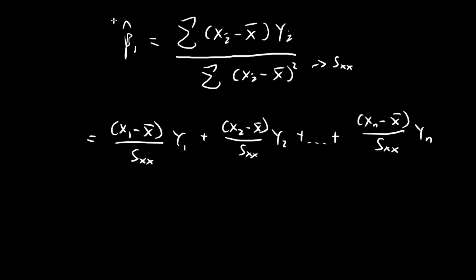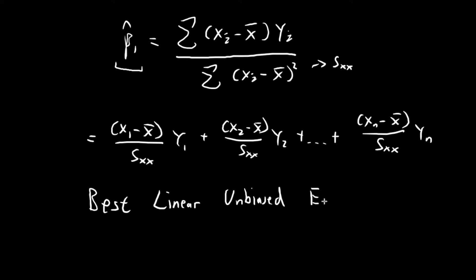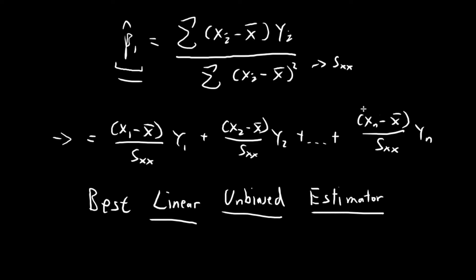What I want to show you in this video is that this estimator, beta 1 hat, is what we call a best linear unbiased estimator. It's called an estimator because this thing is an estimator. It's unbiased because previously I showed you that this estimator has an expected value of beta 1. It's linear because this estimator is a linear combination of y terms. And it's called best because of all possible linear combinations of y terms which you can use as estimators for beta 1, this particular estimator has the lowest variance.